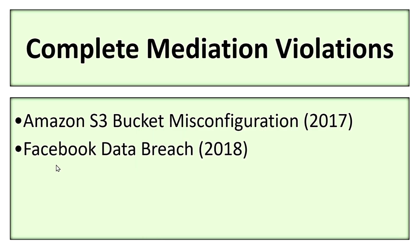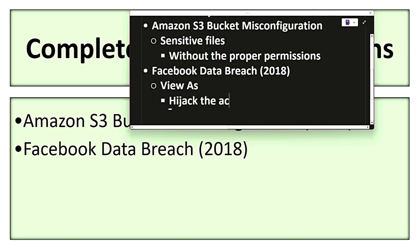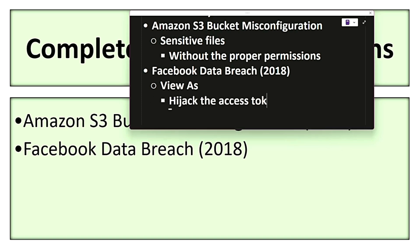The next example is the Facebook data breach in 2018. Attackers used a vulnerability in Facebook's 'View As' feature, which allowed them to hijack the access tokens of users, bypassing authentication and authorization checks. Facebook did not perform complete mediation on session tokens, allowing unauthorized access based on cached information.